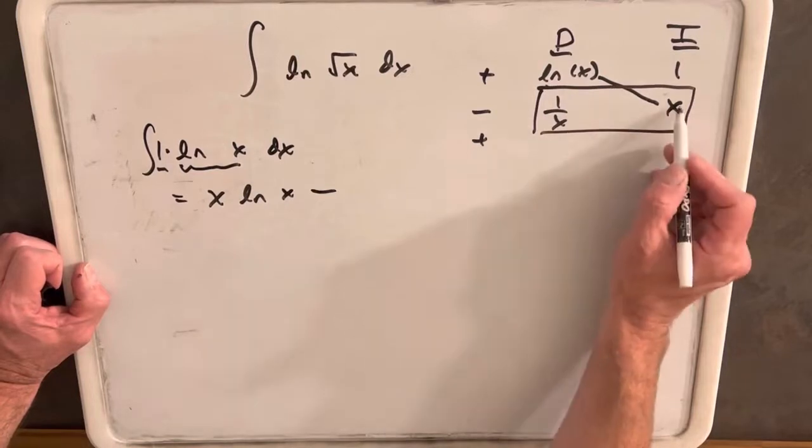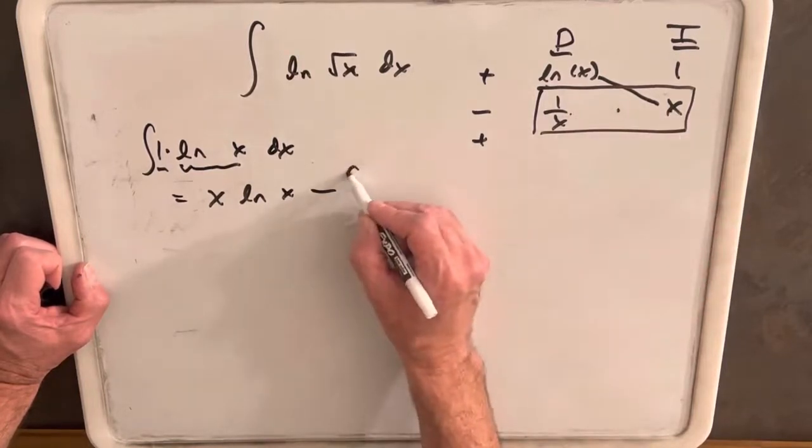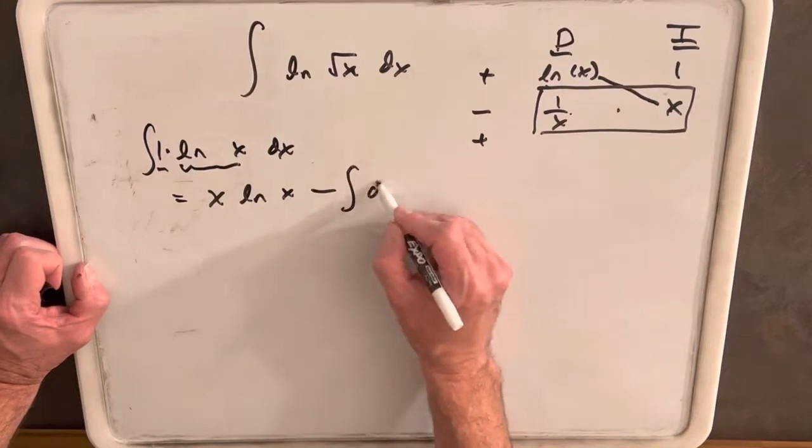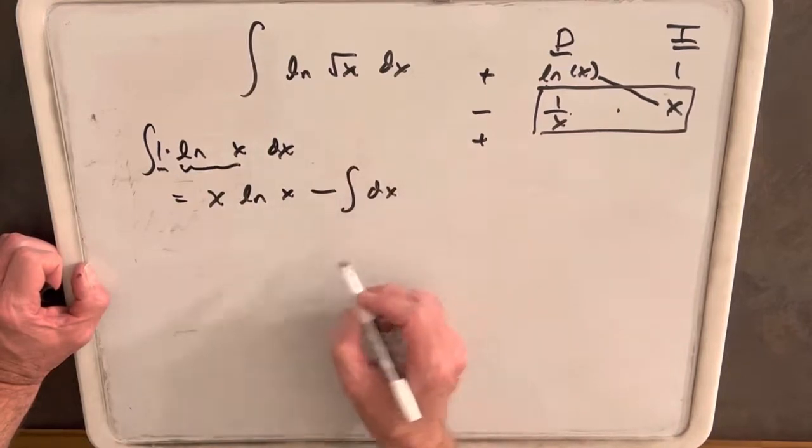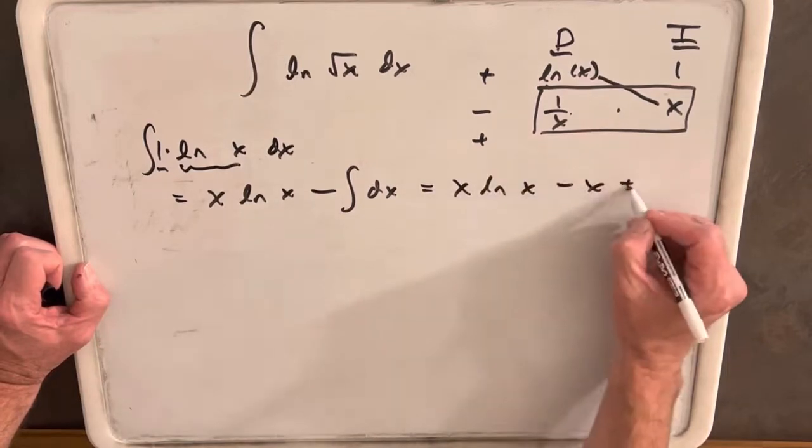This line will be its own integral, but if we multiplied, x times 1 over x is just 1. So we actually have here the integral, subtracting the integral of dx. And so this whole thing is just going to be x ln x minus x plus c.